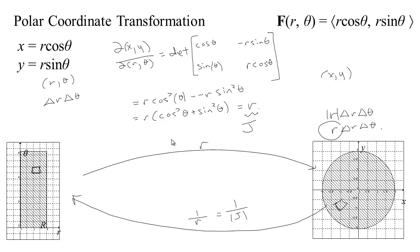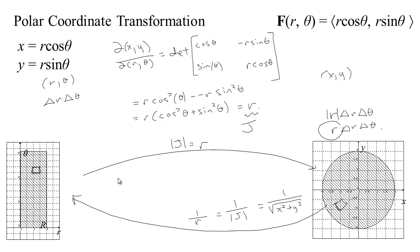So we calculated our Jacobian this way, giving us the stretching factor in this direction. To get the stretching factor in the opposite direction, you can always just use 1 over r. We could even express that in terms of x and y, since the absolute value of r is the square root of x squared plus y squared. So we get our stretching factor back in terms of x and y, if we like.